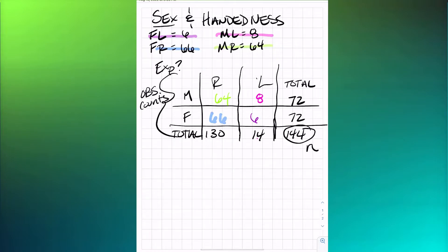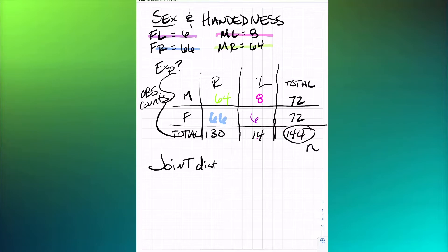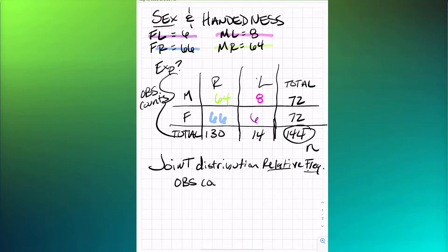To calculate the joint distribution relative frequencies for each cell, we take the observed count — the colored numbers inside the contingency table — and divide by n, which is the sample size, or 144. It's the observed count relative to the total — that's how it gets its name.